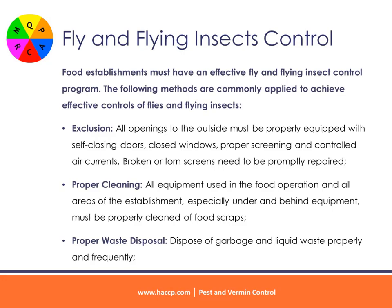Fly and Flying Insect Control. Food establishments must have an effective fly and flying insect control program. The following methods are commonly applied: Exclusion — all openings to the outside must be properly equipped with self-closing doors, closed windows, proper screening and controlled air currents. Broken or torn screens need to be promptly repaired. Proper cleaning — all equipment used in the food operation and all areas of the establishment, especially under and behind equipment, must be properly cleaned of food scraps.